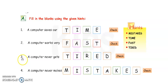Next, question number 3. Computer never gets tired. T is written. You have to write I. R is written. And you have to write E and D here. Spelling of tired is T-I-R-E-D.